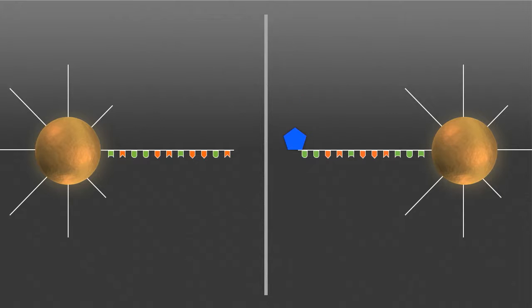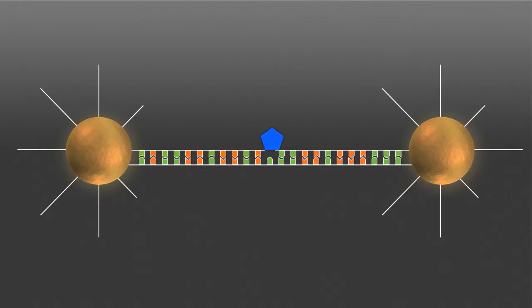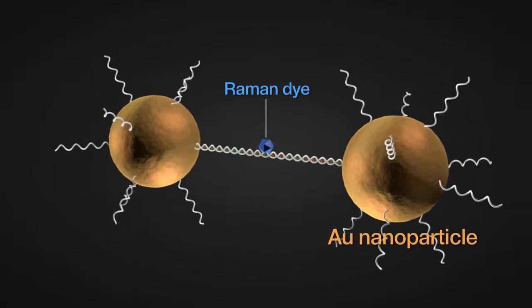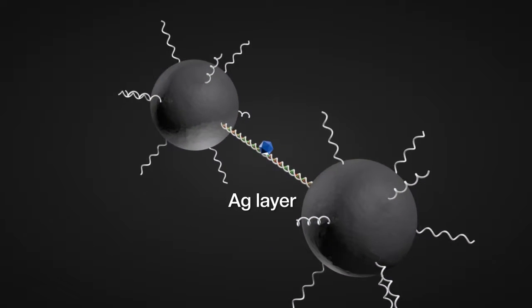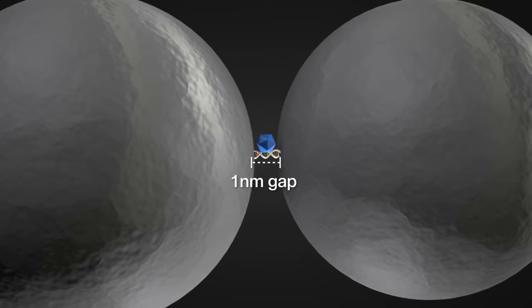This team initially tied two gold nanoparticles with double-strand DNAs where a single Raman dye molecule is tagged at the center of the DNA, then coated the connected gold heterodimer nanodumbbell cores with silver shell to form a less than one nanometer nanogap to sandwich the single Raman dye molecule in between.